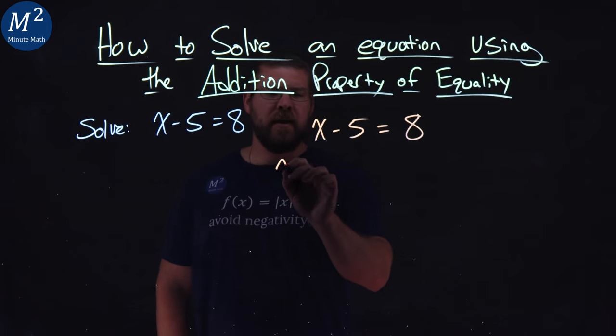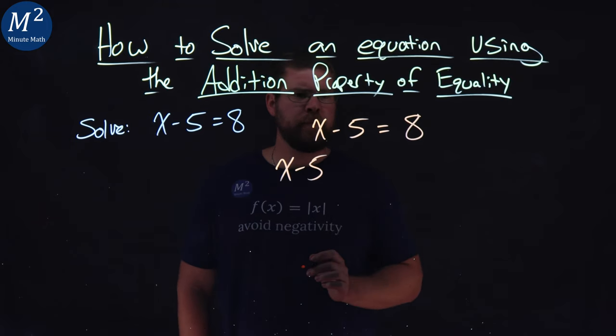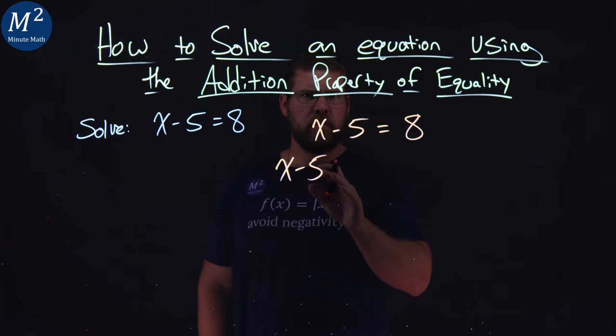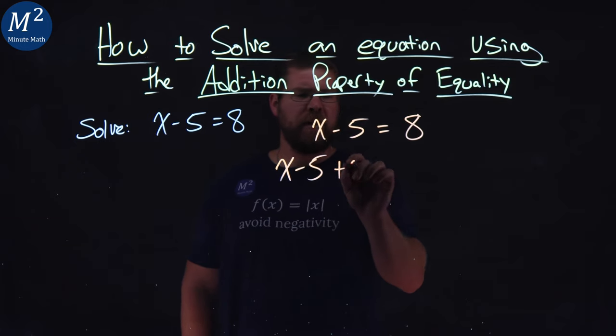So I'm going to rewrite the left-hand side, x minus 5, and I want to cancel out this 5, I want x by itself, so what I need to do is we'll add, we'll cancel out this negative 5, which is a positive 5, so I'm going to add a 5.